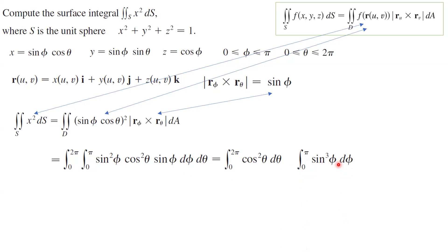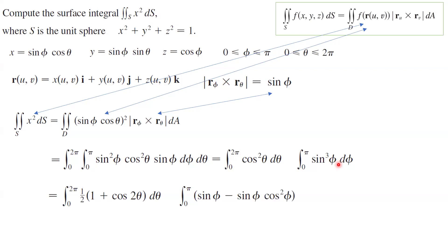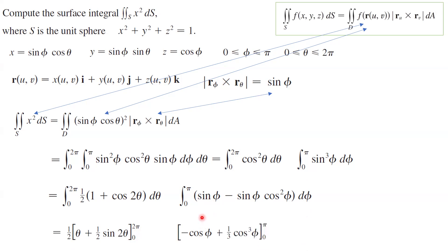Going back to elementary calculus, this can be written as the integral from 0 to 2π of (1/2)(1 + cos(2θ)) dθ, times the integral from 0 to π of (sin(φ) − sin(φ)cos²(φ)) dφ. Evaluating gives [½θ + ¼sin(2θ)] from 0 to 2π, times [−cos(φ) + (1/3)cos³(φ)] from 0 to π. Carrying out the computation, this equals 4π/3.